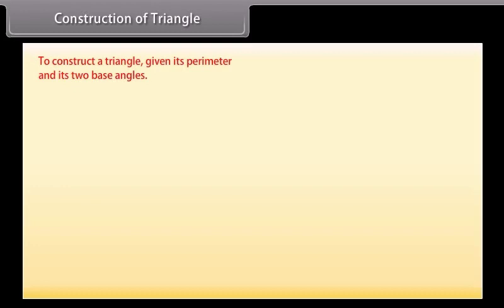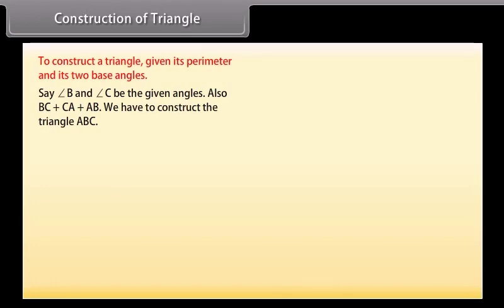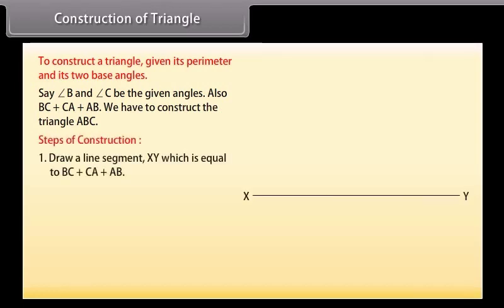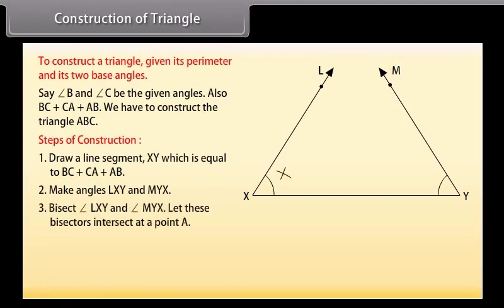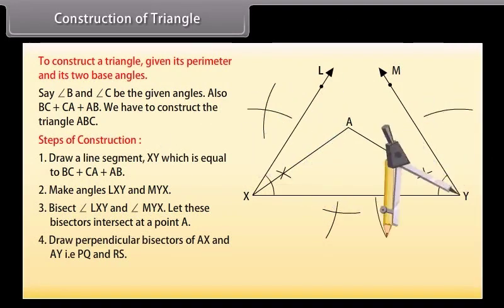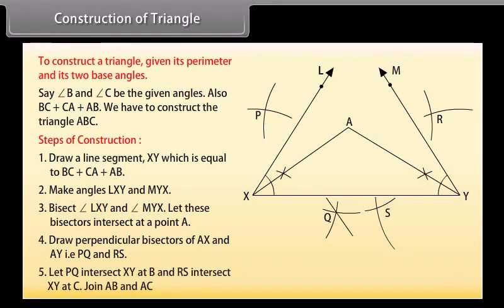Now we will construct a triangle given its perimeter and its two base angles, say angle B and angle C. Also given: BC plus CA plus AB. We have to construct triangle ABC. Steps of construction: Firstly, draw a line segment XY equal to BC plus CA plus AB. Make angles LXY and MYX equal to the given angles. Now bisect angles LXY and MYX. Let these bisectors intersect at point A. Next, draw perpendicular bisectors of AX and AY, that is PQ and RS. Let PQ intersect XY at B and RS intersect XY at C. Join AB and AC. Then ABC is the required triangle.